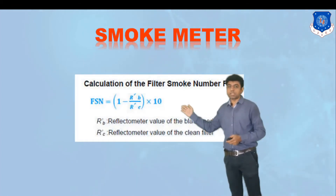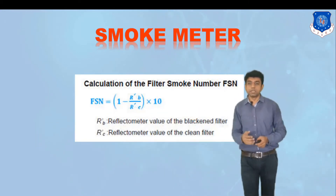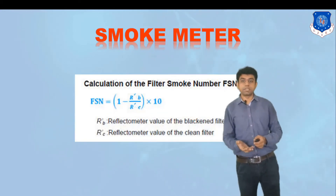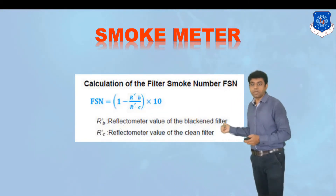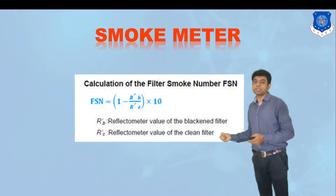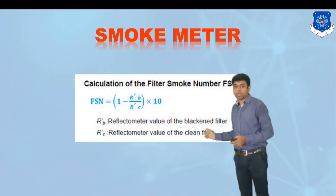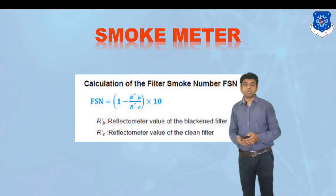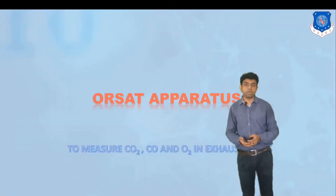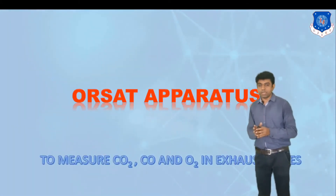The reflectance value of the normal filter paper is measured, and after passing the exhaust gases, the new reflectance value is measured. This gives the Filter Smoke Number, which is given as: FSN = 1 − (R'B / R'C), where R'B is the reflectometer value of the blackened filter after exhaust gas has passed through, and R'C is the reflectometer value of the clear filter. Using these two values we can calculate the amount of smoke present in the exhaust gases.